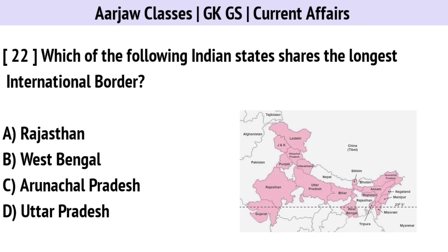Which of the following Indian states shares the longest international border? The correct option is B — West Bengal.